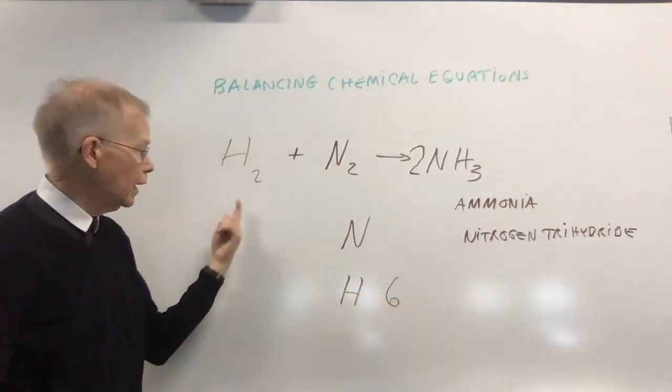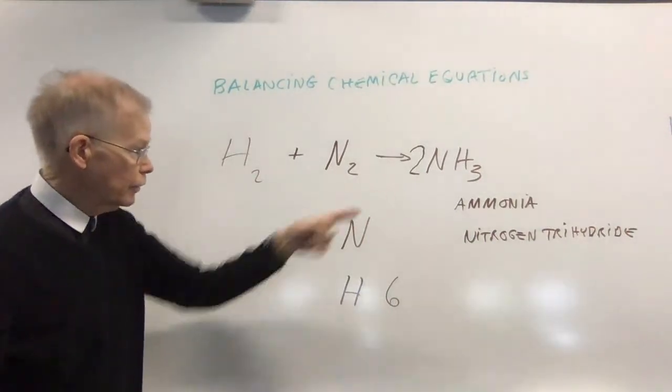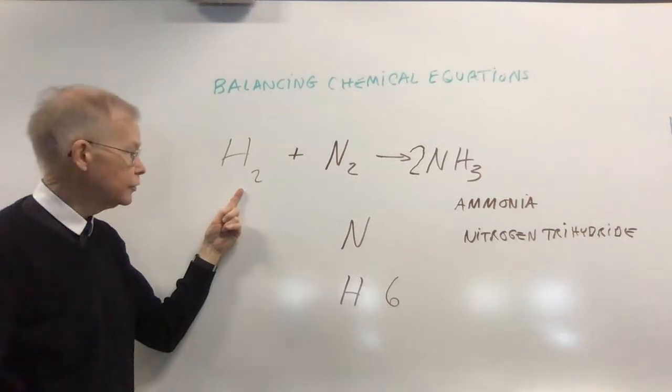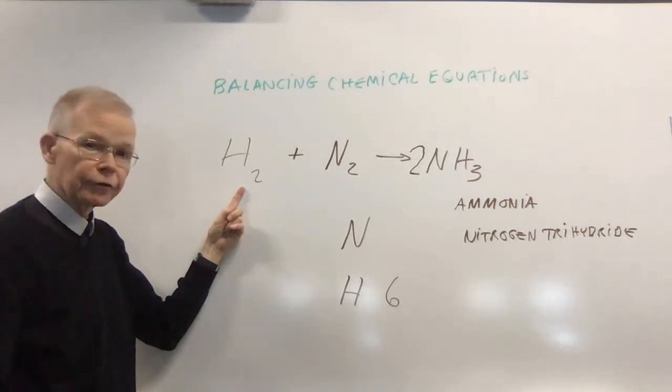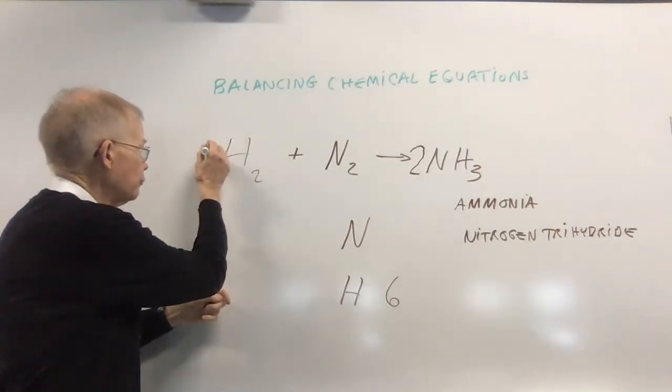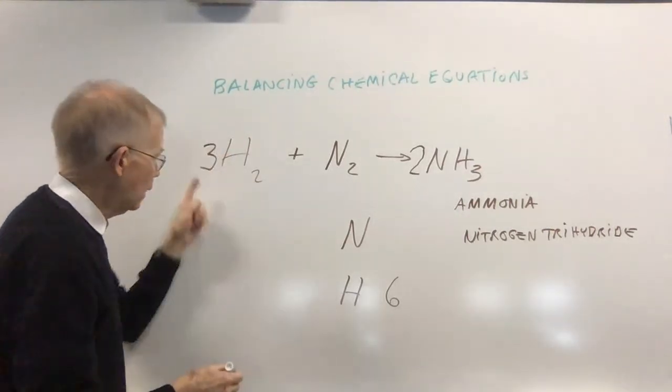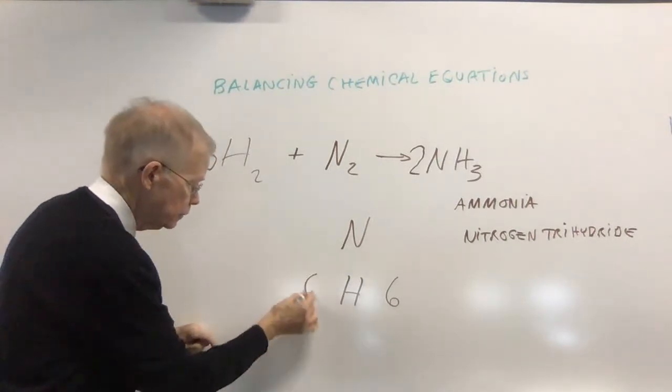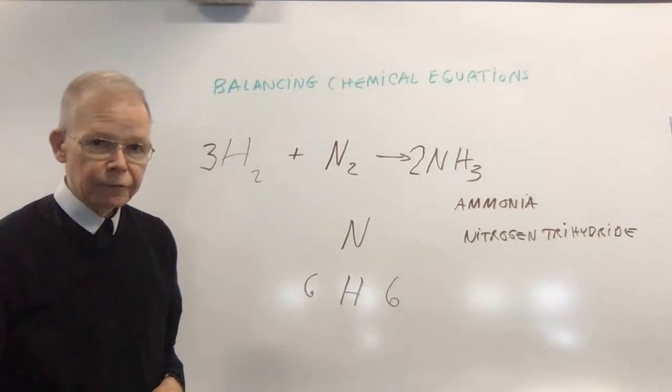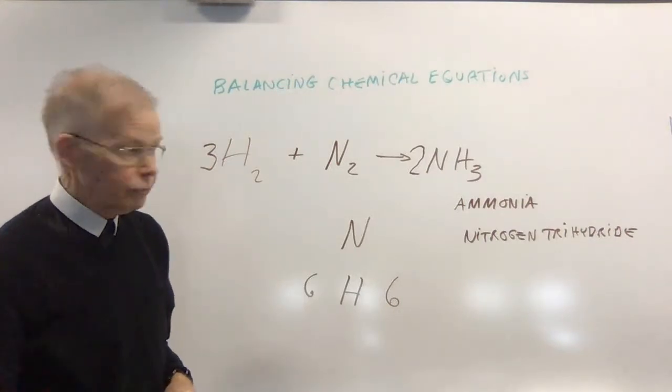I come to this side. That was a 3 over there times 2. What number that makes is a 6. So, what coefficient can I put in front of this to give me 6 hydrogens? And that coefficient would be a 3. Now, 3 times 2 is 6, 2 times 3 is 6. So, they're matched.